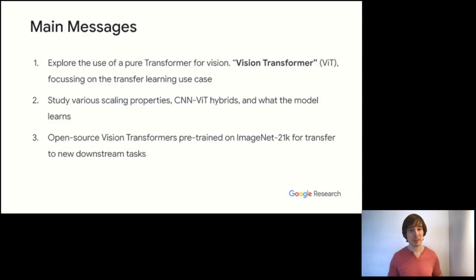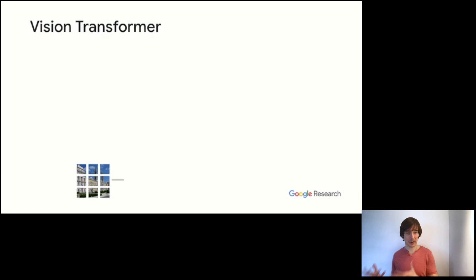And so the main message of the paper is we explore the use of a pure transformer for vision, focusing on this transfer learning use case. We study the scaling properties of the model and compare it to traditional convnets, as well as hybrids of convnets and transformers, and look a bit at what the model learns. Perhaps most importantly, we open source vision transformers pre-trained on the large ImageNet-21k dataset that can be used for practitioners or for researchers to try out new downstream tasks.